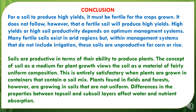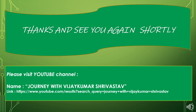As a conclusion regarding soil fertility and productivity: for a soil to produce high yields it must be fertile for the crops grown, but it does not follow that a fertile soil will produce high yields. High yields or high soil productivity depends on optimum management systems. Many fertile soils exist in arid regions but without management systems that include irrigation, these soils are unproductive for crops like corn or rice. Differences in properties between topsoil and subsoil layer affect water and nutrient absorption. This presentation was all about soil fertility and productivity.